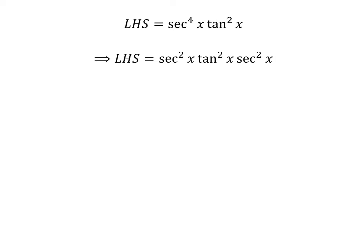We can write the left hand side as square of secant of x times square of tangent of x times square of secant of x. We know the trigonometry identity: square of tangent of x plus 1 is equal to square of secant of x. The proof of this identity is given in the video appearing in the upper right corner, and the link is also given in the description section.